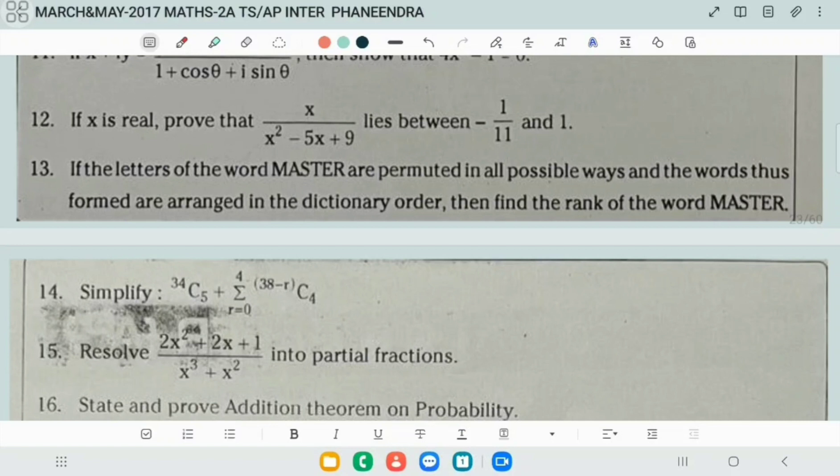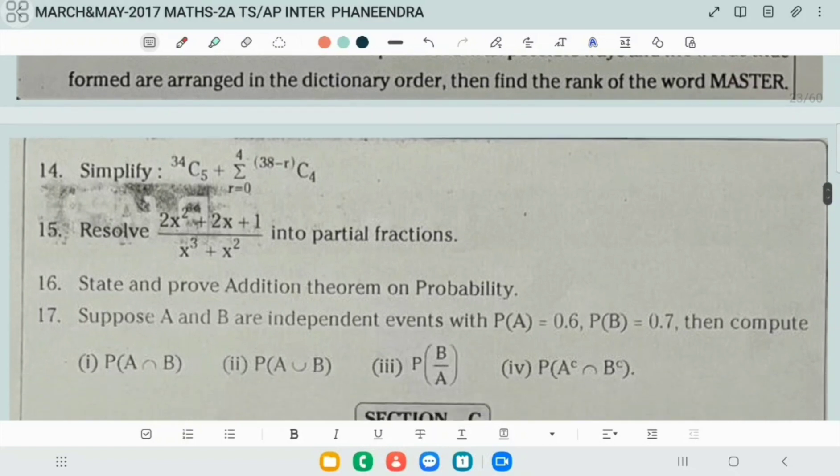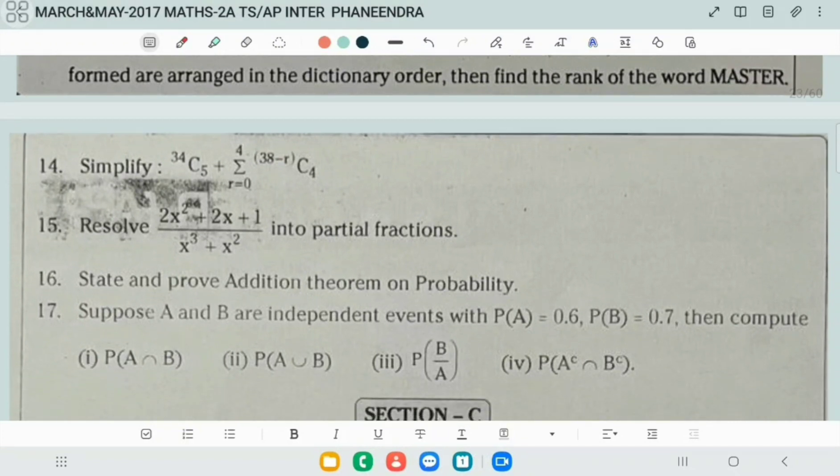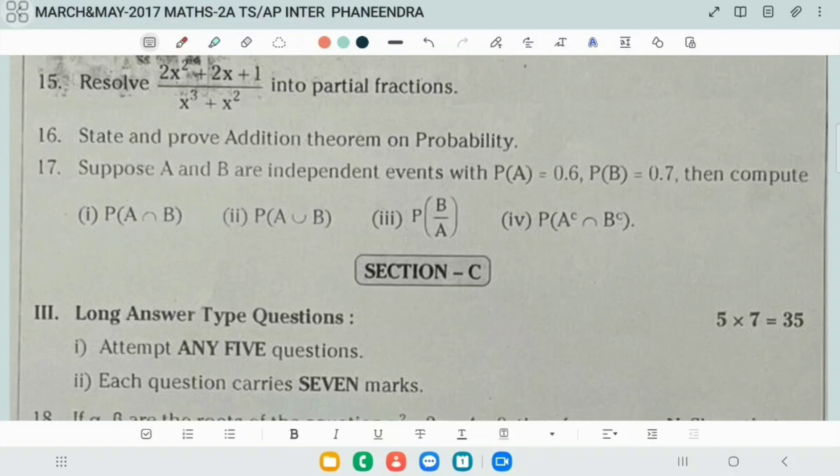In the respective papers, Maths 2A, Maths 2B, that is the purpose I am giving these, students. Next, question number 12, complex quadratic equation. Question number 13, rank of the word MASTER. And then 14th question was repeated again. Next, partial fractions, state and prove addition theorem on probability. Next, question number 17 is again independent events case, same question.